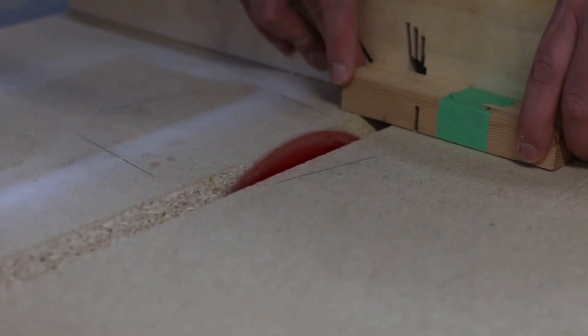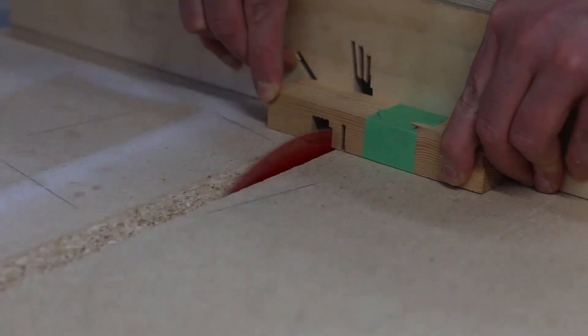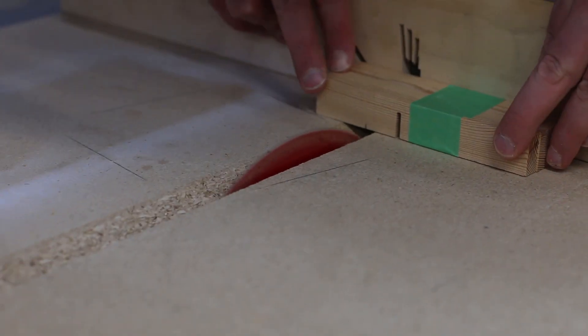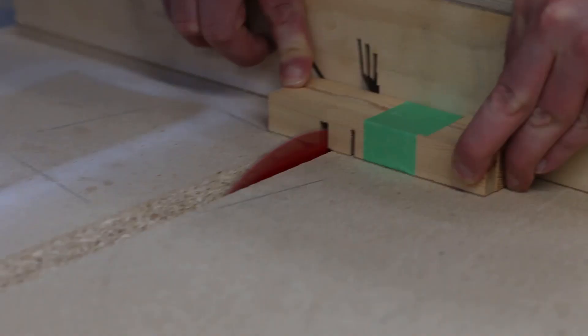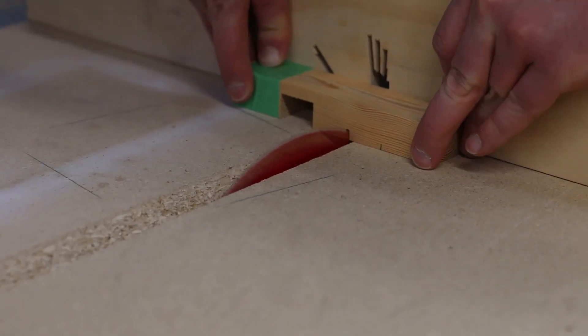After marking out the pieces and taping them together for accuracy, I set the height of my blade to 5 eighths of an inch and removed the material on the table saw sled. If you have a dado blade, you can do this much faster than shown here.